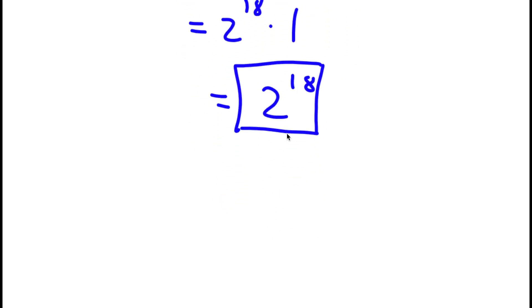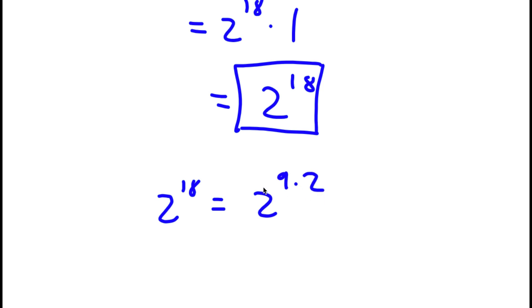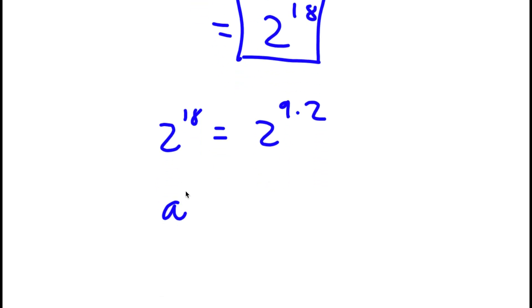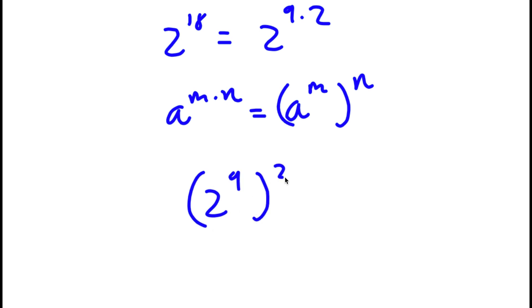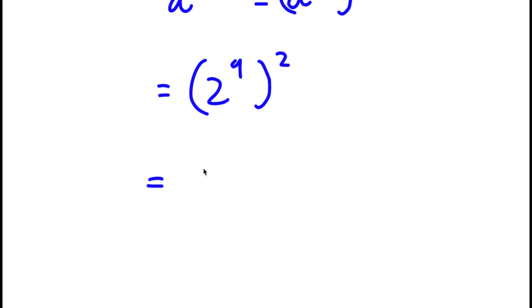Although that is a solution, I'm actually going to find a way to simplify this further. So 2 to the power of 18 is the same thing as 2 to the power of 9 times 2. And if I have something in the form a to the power of m times n, this is the same thing as a to the power of m to the power of n. So 2 to the power of 9 times 2 becomes 2 to the power of 9, to the power of 2.